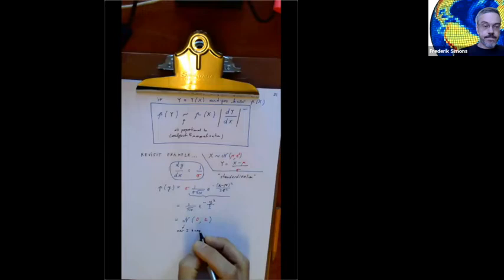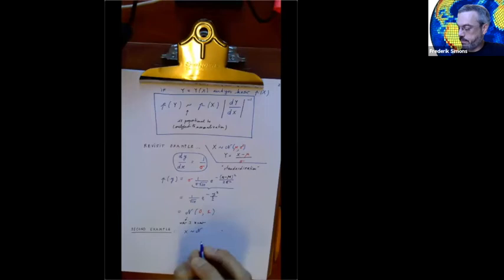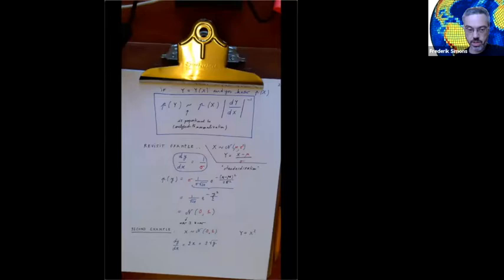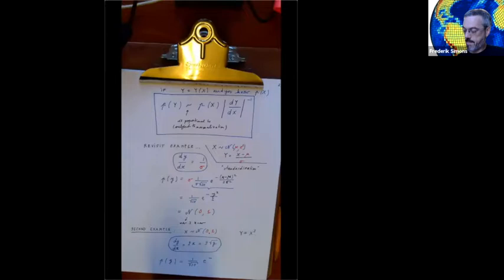Second example: begin with x normally distributed in the standard way — mean 0, variance 1. I want to make a transformation y = x². What's the distribution of that? dy/dx is 2x, and that really is 2√y. There's my transformation. The distribution of y — a squared normal variate — gives: the 2 goes away, so 1/(2√(2π)) × e^{−x²} which ends up being e^{−y/2} because the 2 over 2 dropped out. And I still need the square root of y.